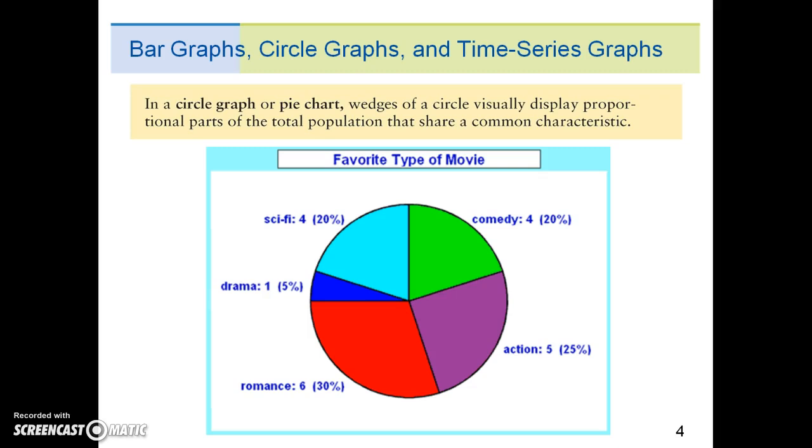This circle graph example shows the favorite type of movie. We can easily see that 30% of individuals surveyed chose romance and 5% chose drama. The total quantity or 100% is represented by the entire circle. Each wedge of the circle represents a component part of the total.